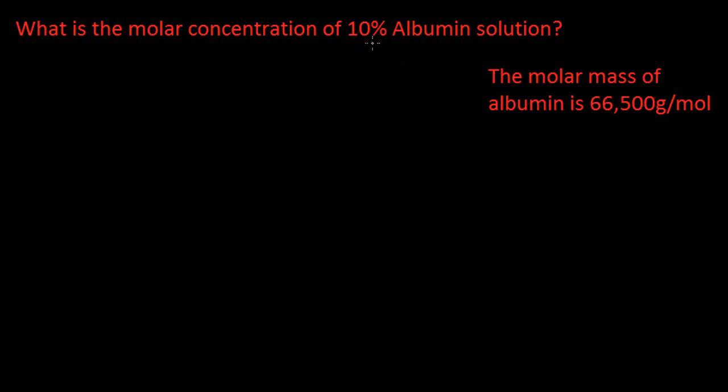So the important thing to note here is that it's a 10% albumin solution. So it's inside a solution. So 10% is actually 0.1. So you need to think in your head, what would make something go to 0.1? Well, it would be 10 grams per,